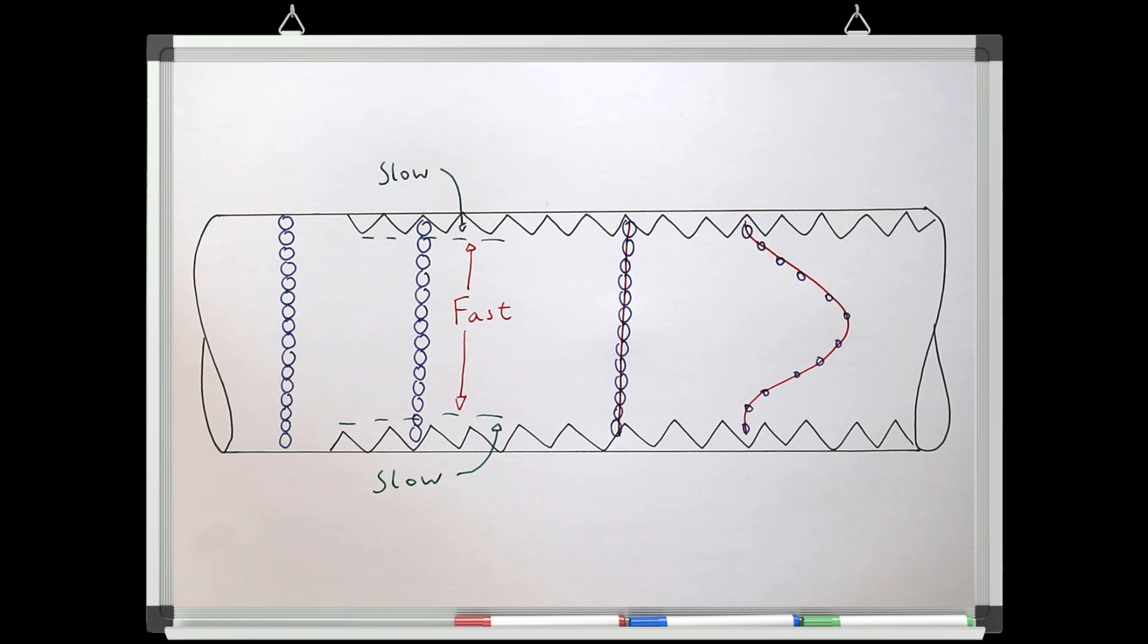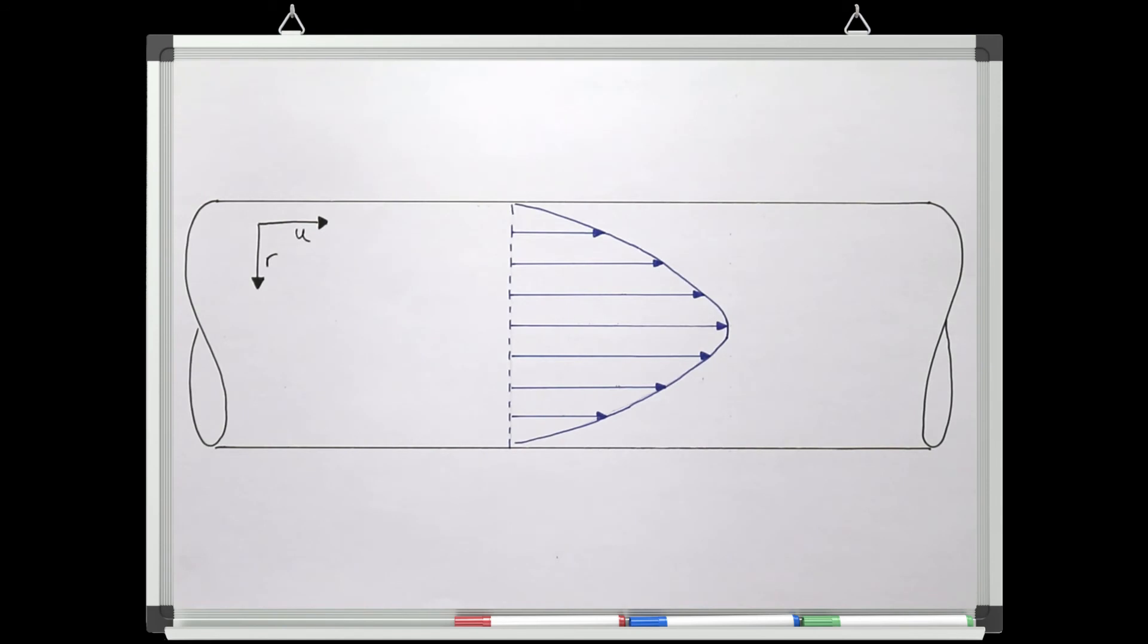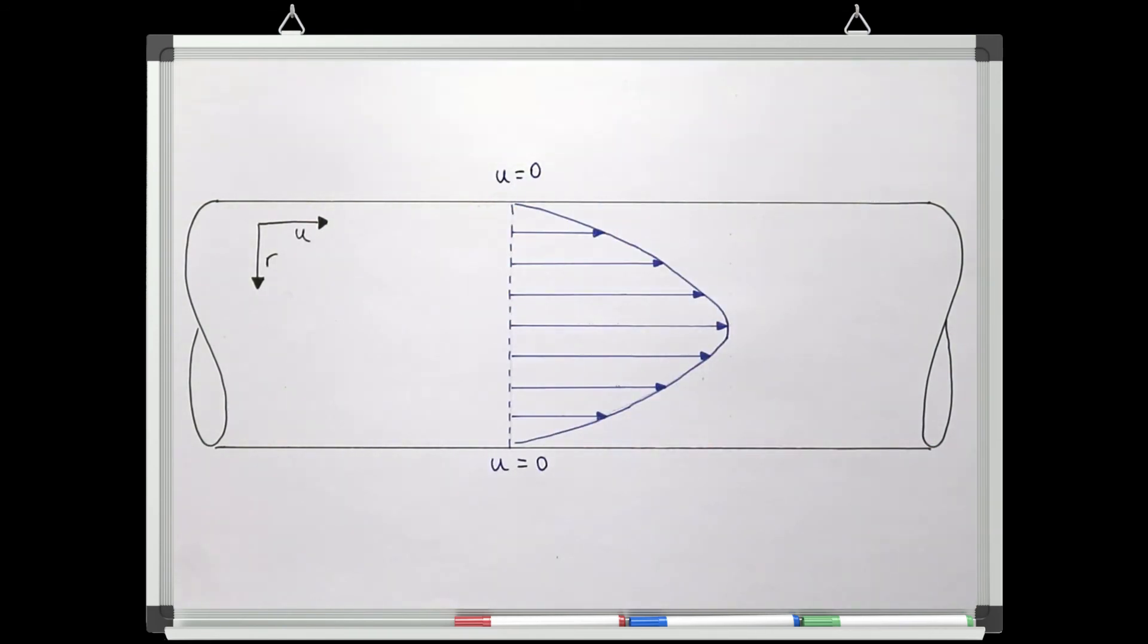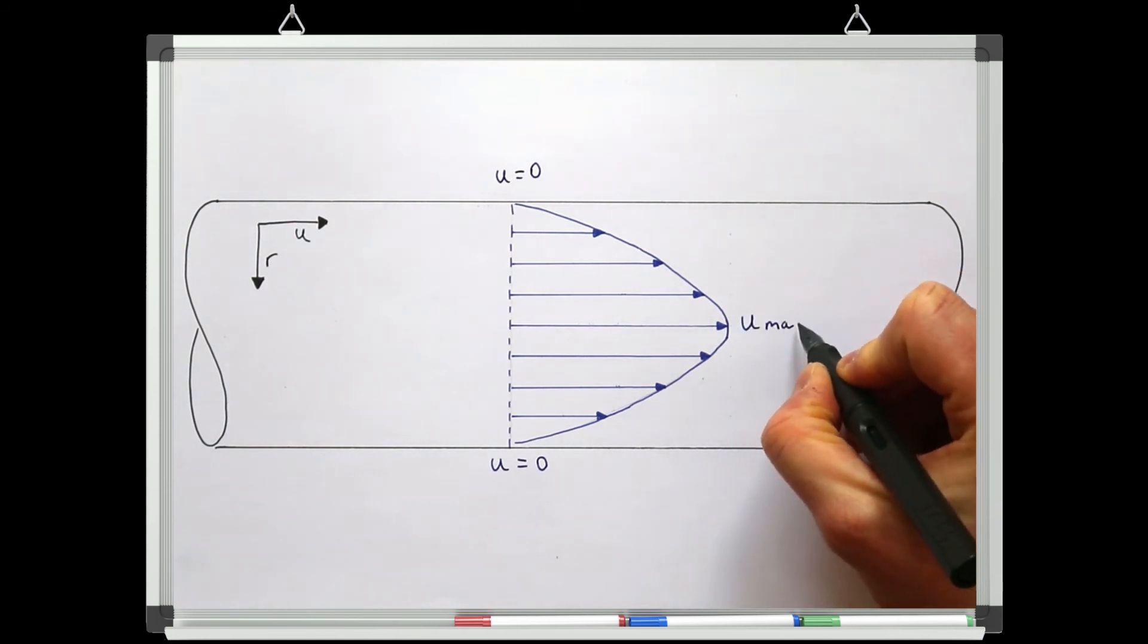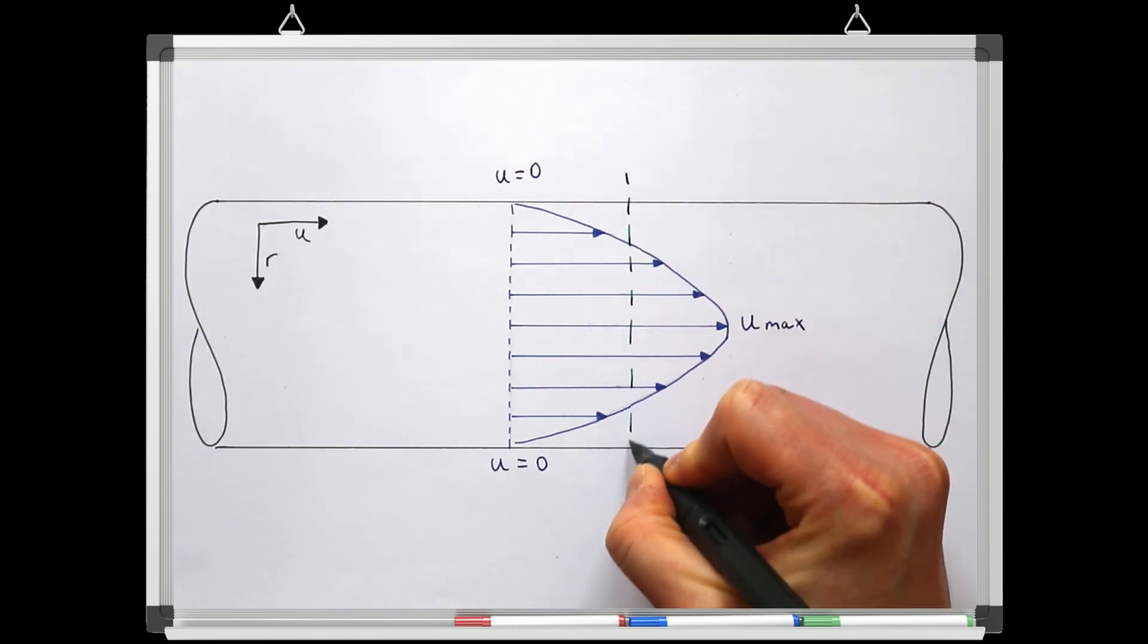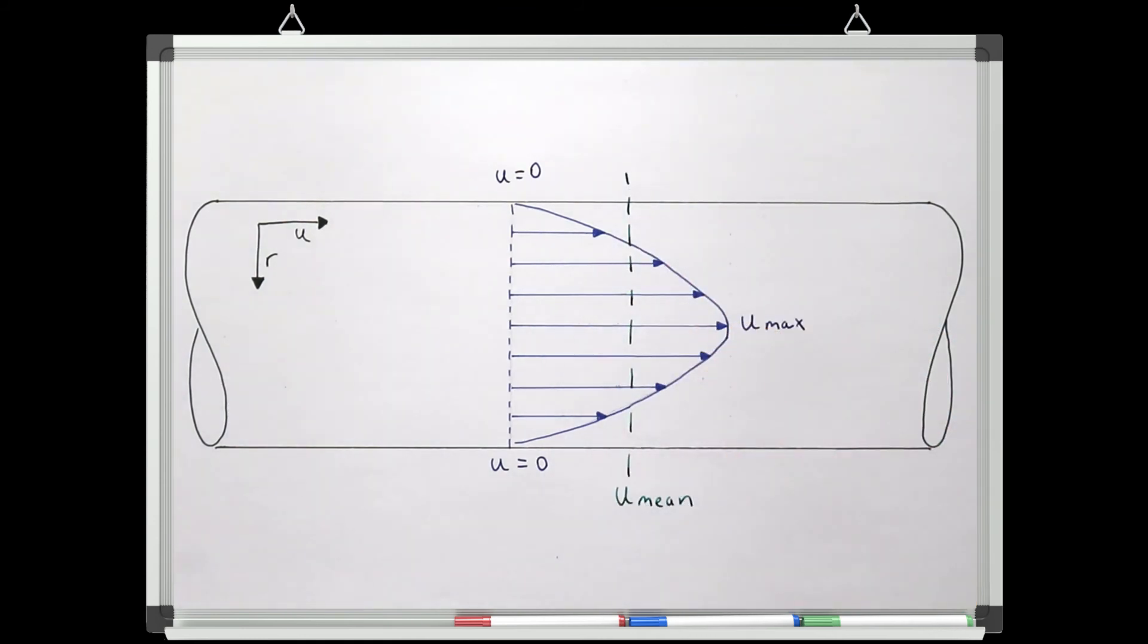What we end up with is a distribution of velocities. Particles at the wall will have zero velocity. The particles at the center line furthest away from the friction at the wall will travel at the flow's maximum velocity, which can be up to two times larger than the mean velocity, and then we have a distribution of velocities in between as the effect of the friction at the wall is translated into the main flow because of viscosity.